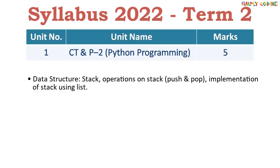In Term 2 there are 5 marks of Python programming, which includes data structures. Within data structures, only stack operations remain — everything else has been removed.